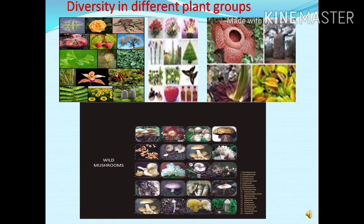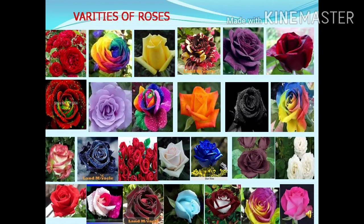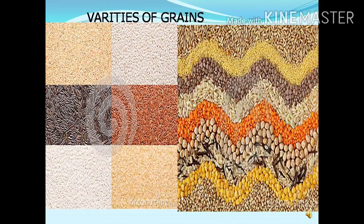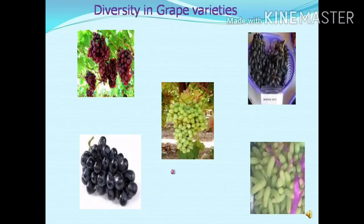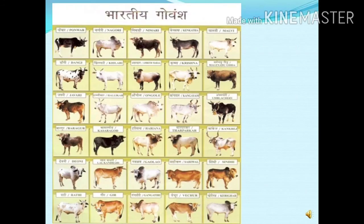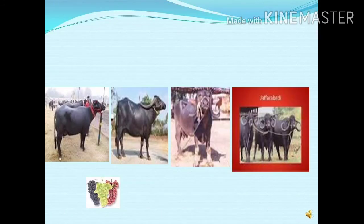These slides indicate the variety of plant forms as examples of biodiversity. These are different examples of rose varieties — a good example of biodiversity of the rose. These are the wild varieties of grain; we have a lot of wild varieties of a single species showing lot of biodiversity. These are different varieties of grapes, which is also an example of biodiversity. These are different types of domestic animals, diverse in nature and useful for breeding purposes.